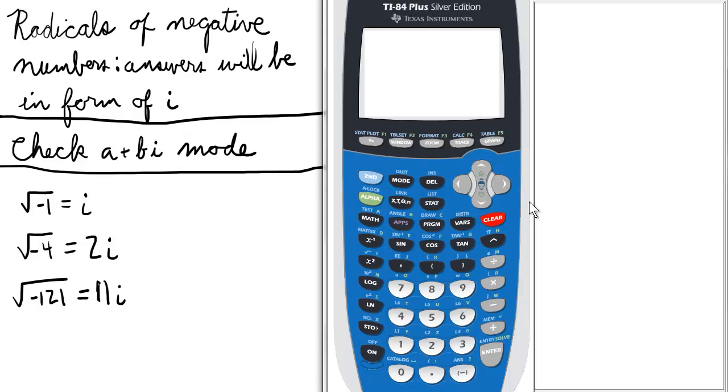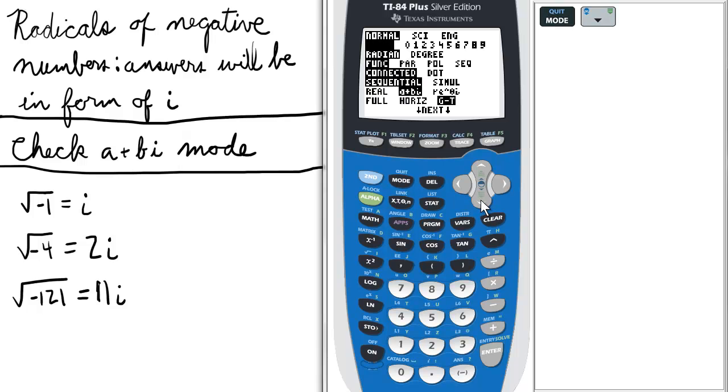When we take the square roots of negative numbers, the answer will be in some form of i. We want to make sure we go to mode, and on the second to last line on this first page, scroll over to a+bi and press enter to select it.